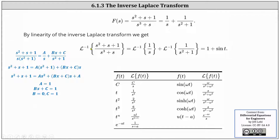Now we take the inverse Laplace transform of both sides and use linearity. We find the inverse Laplace transform of 1/s using the first formula in the first column, where the inverse Laplace transform of a constant is equal to the constant divided by s. In our case the constant is one, so the inverse Laplace transform of 1/s equals one. For 1/(s² + 1), we use the first formula in the second column: the Laplace transform of sin(ωt) equals ω/(s² + ω²). Here ω² = 1, so ω = 1, and the inverse Laplace transform is sin(t). Therefore the inverse Laplace transform of the original F(s) is 1 + sin(t).